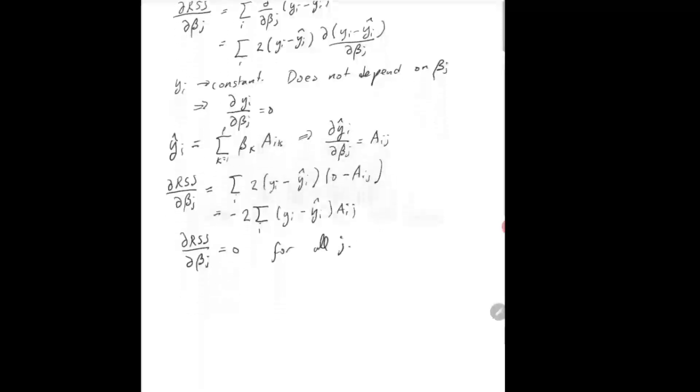Now, what that means is I'm going to show you that this, if I set this equal to 0, first of all, I can just forget about that minus 2. That means I really just want... That's the same as just saying that the sum over i of a i j of y i minus y hat i is equal to 0 for all j.